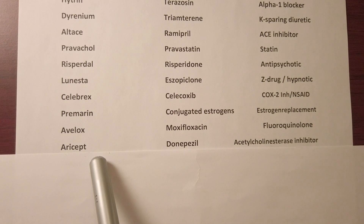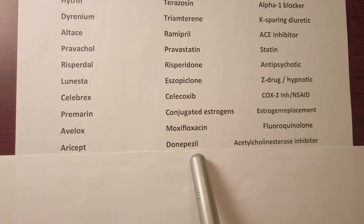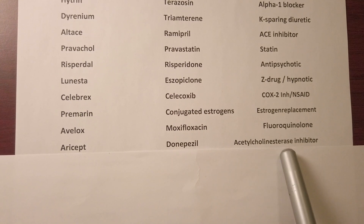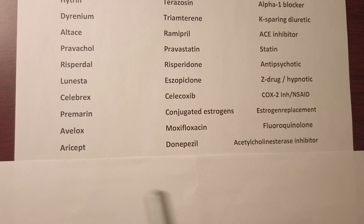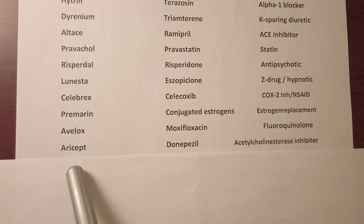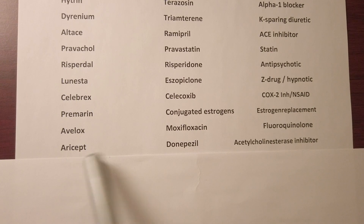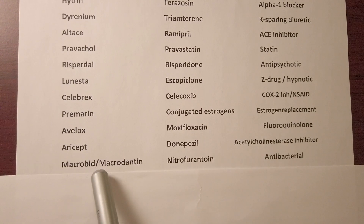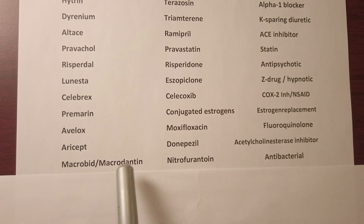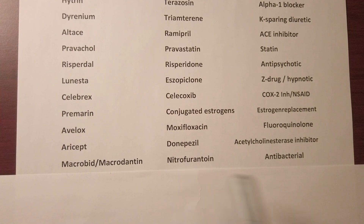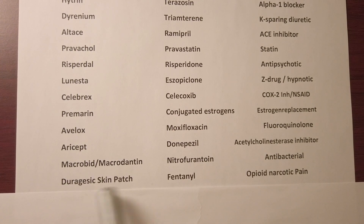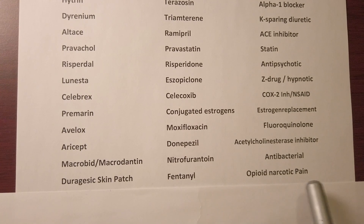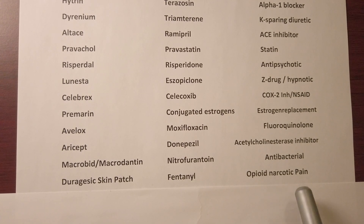We have Aricept — generic name donepezil — it's an acetylcholinesterase inhibitor used in Alzheimer's patients. We have Macrobid or Macrodantin, generic name nitrofurantoin, an antibacterial drug. We have the Duragesic skin patch, generic name fentanyl — it's a narcotic pain drug.